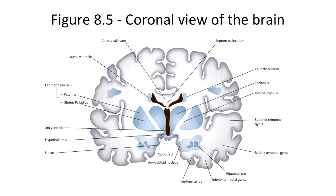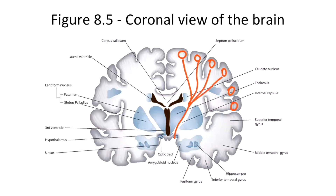An upper motor neuron originates in the primary motor cortex — approximately this region where I'm drawing circles. These neurons send axons down through the brain and through the internal capsule. Recall from section one that the corticobulbar tract passes through the genu of the internal capsule.